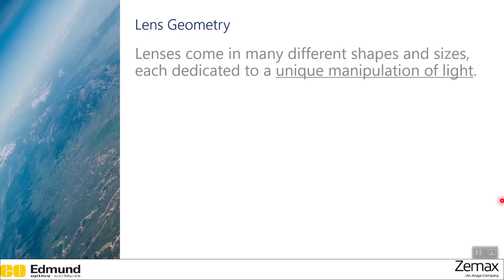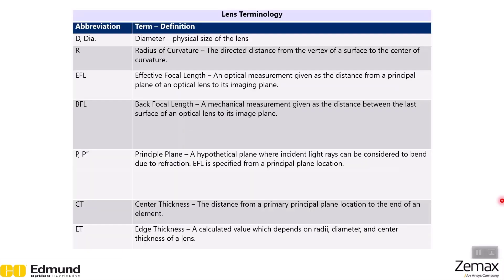Here's just a quick lens terminology chart. On the left, we have the abbreviation for the term, and on the right, there's the definition. You can feel free to pause the video here and review the table. However, I will discuss more in detail on the next slide with a visual diagram, which will be a bit easier to comprehend.